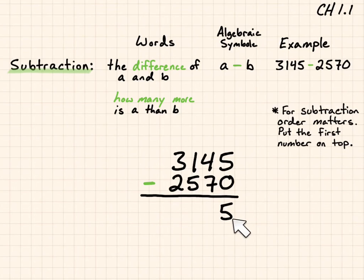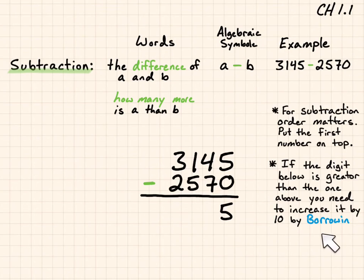Now, 5 minus 0 is 5, but 4 minus 7, I can't take 7 away from 4. So if the digit below is greater than the one above, you need to increase it by 10 by borrowing from the place value to the left. So since 7 is greater than 4, I'm going to borrow from the 1 here. I'm going to make the 1 a 0. The hundreds came over to the tens, and this became 140 right here. And 140 minus 70 gives me 70. So I can pull that down.